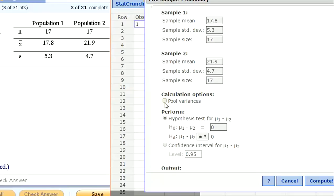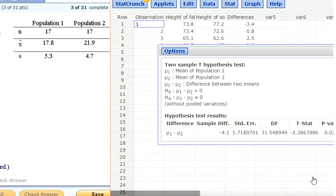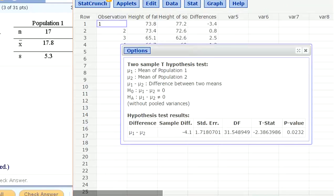I do not want to pool variances. Only pool variances if you can, if you want to assume that variance of the two populations is the same, but we don't want to assume that. The null hypothesis is that mu one minus mu two equals zero. That's remember equivalent to mu one equals mu two. And so we pick not equal to for our alternative and click compute and we can see what we get.